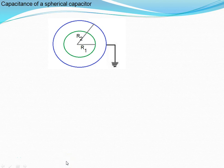Capacitance of a spherical capacitor. A spherical capacitor consists of a solid or hollow spherical conductor surrounded by another concentric hollow spherical conductor. The inner sphere has radius R1, the outer sphere has radius R2, and charge Q is given to the inner sphere.